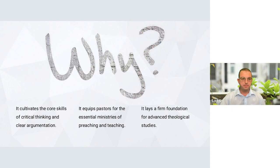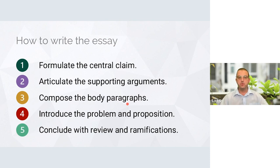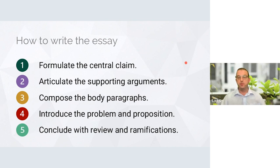Against that background, let me talk about how to write a good argumentative essay. I'm going to suggest five steps — or processes. They're not necessarily sequential, though I've tried to put them in the most natural order. The opening task is to formulate a central claim. You read widely, think deeply, and when you've done enough of that, you arrive at the central claim that will unify your essay. That's the hardest part, but it's also the first critical step.